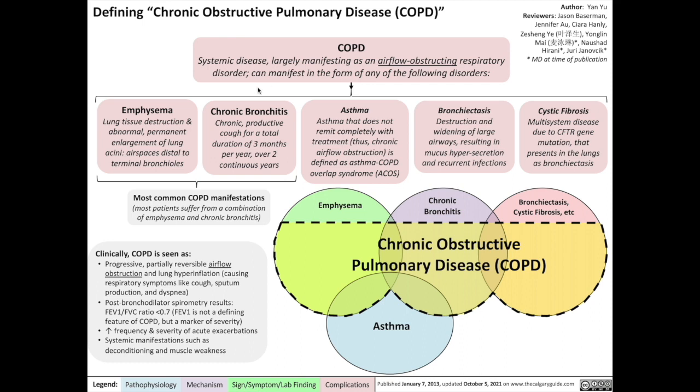First is emphysema. This is lung tissue destruction and abnormal, permanent enlargement of lung acini — airspaces distal to terminal bronchioles.